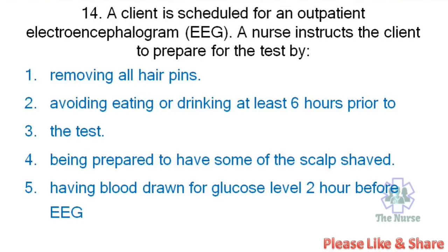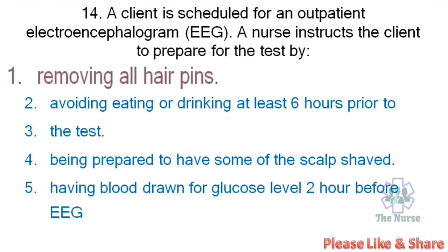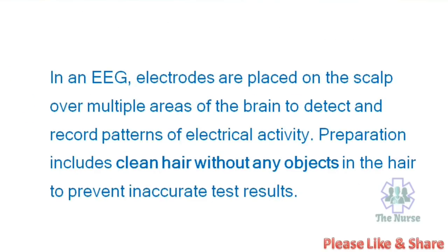Next question: A client is scheduled for an outpatient electroencephalogram (EEG). A nurse instructs the client to prepare for the test by: removing all hairpins, avoiding eating or drinking at least 6 hours prior to the test, being prepared to have some of the scalp shaved, or having blood drawn for glucose level 2 hours before EEG. Correct answer: Removing all hairpins. In an EEG, electrodes are placed on the scalp to detect and record patterns of electrical activity. Preparation includes clean hair with shampoo and no objects in the hair to prevent inaccurate test results.